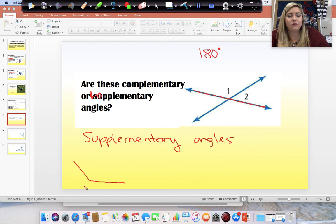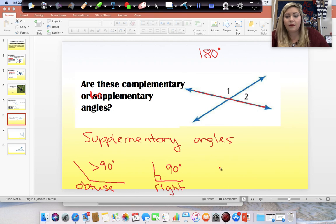Obtuse angles are greater than 90 degrees. Right angles are 90 degrees. They're always right. And, then acute angles. They're acute. They're so little. They're so acute.